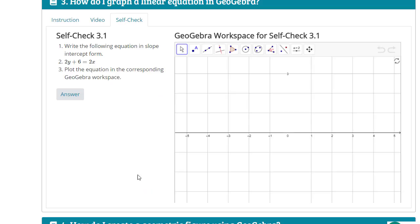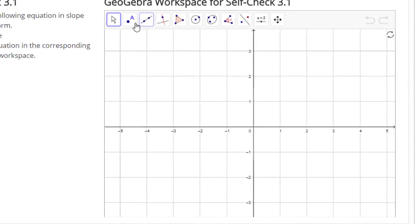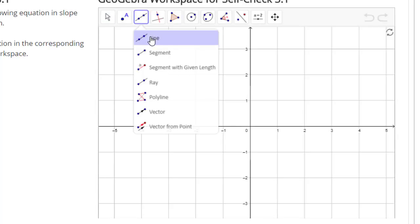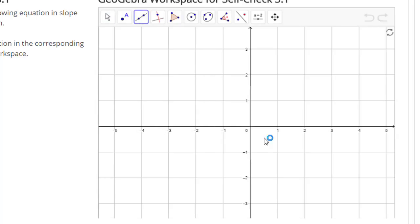So let's go over to GeoGebra. We have no y-axis, so hit this reset construction button. And then I'm going to pick the line tool and then start at our y-intercept, which is negative three. And then we know our slope is positive one.